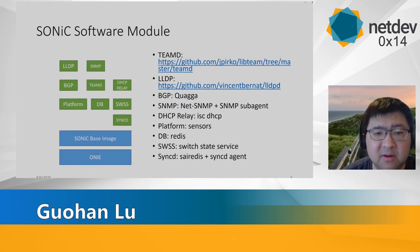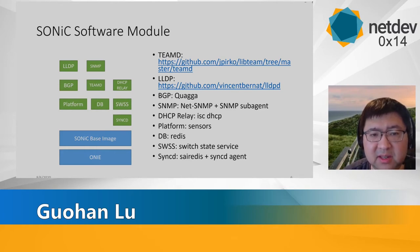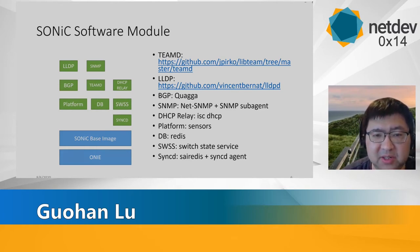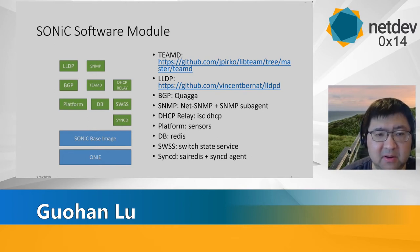Looking more closely at the software modules, we have all the different modules from Linux communities. For example, TeamD, LADP, BGP, and SNMP are all from open source communities. The main components that the SONiC community develops are the SWSS and SyncD components.